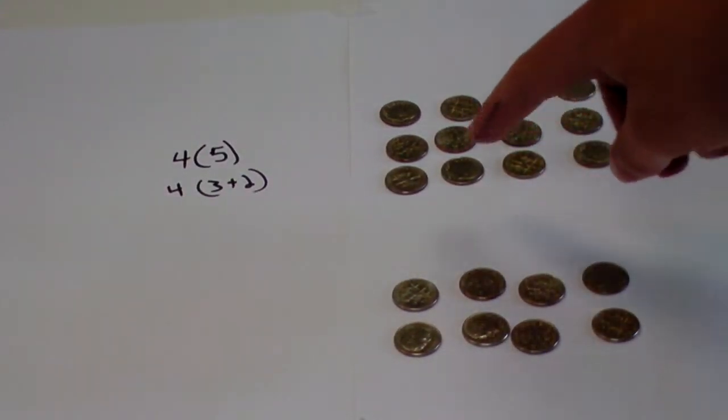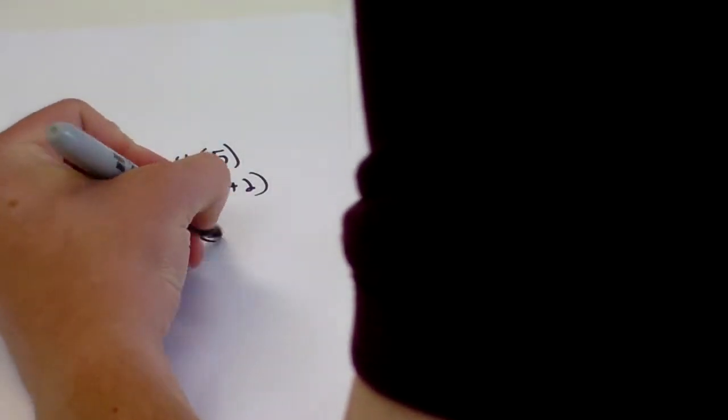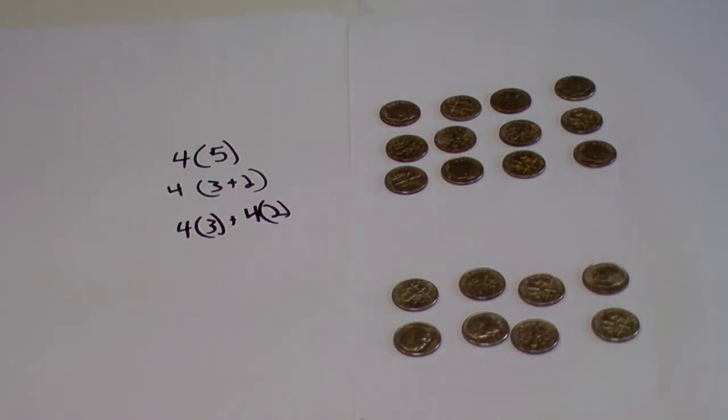and now I have 4 times 3 right here, and then I have 4 times 2 right here. So that is 4 times 3 plus 4 times 2. And of course, obviously, they're the same number of dimes, right? Nothing changed. So there you can see that 4 times 3 plus 4 times 2 is the same as 4 times 3 plus 2.